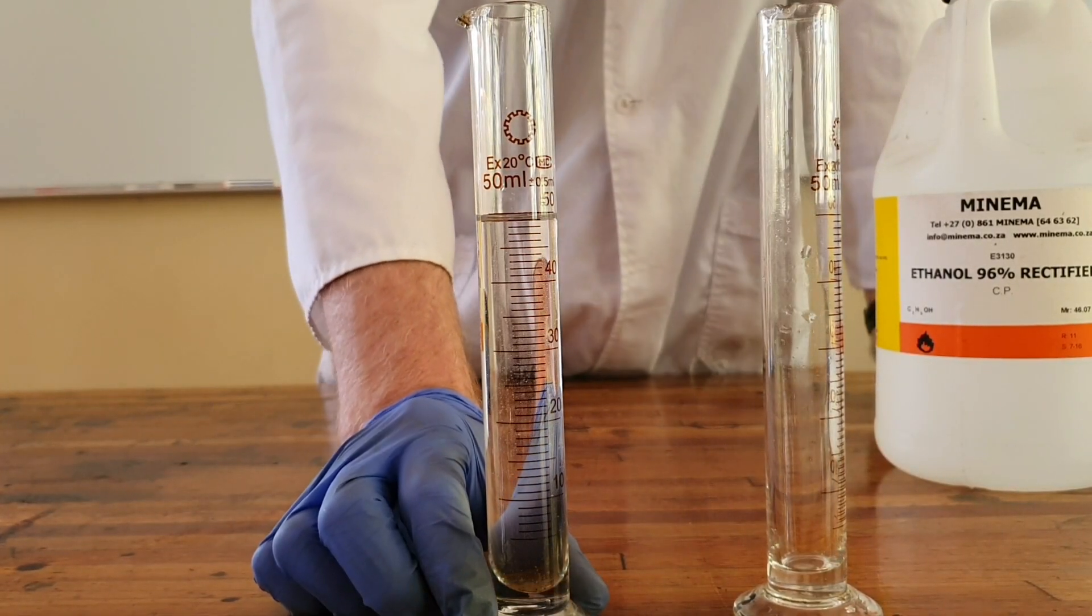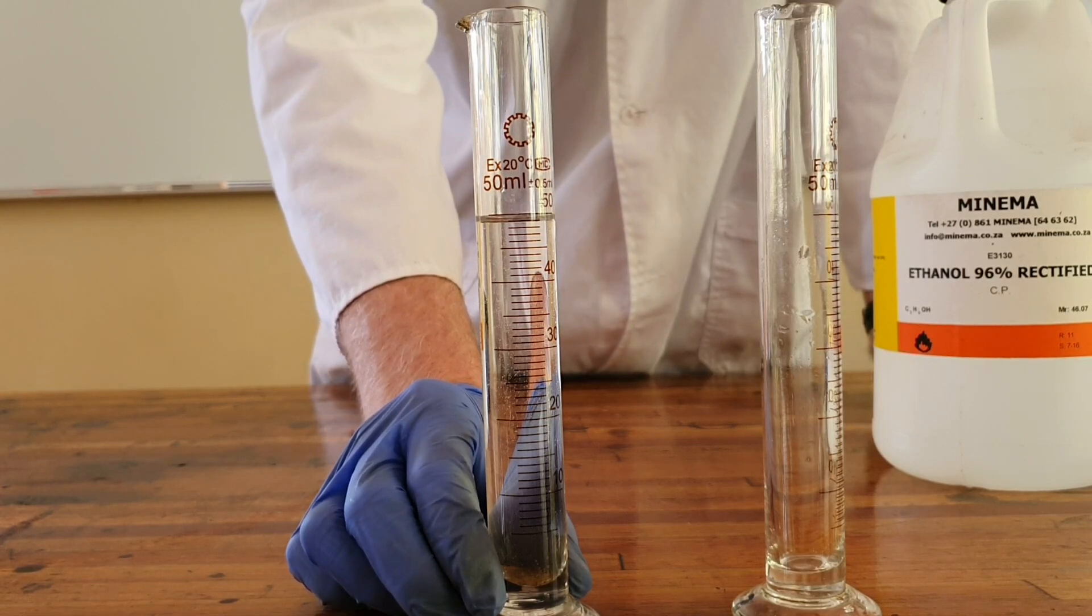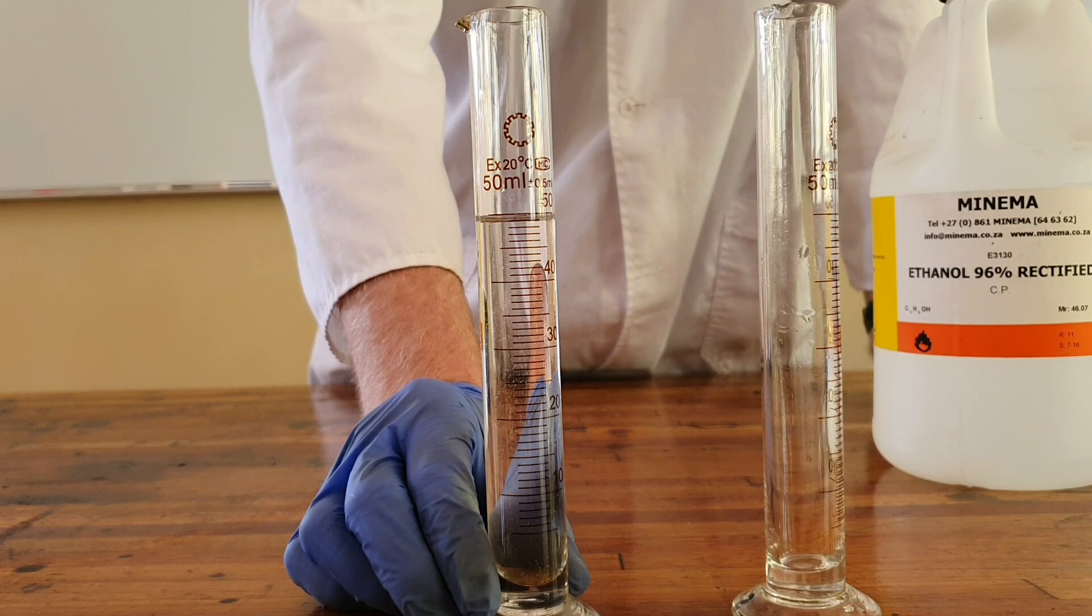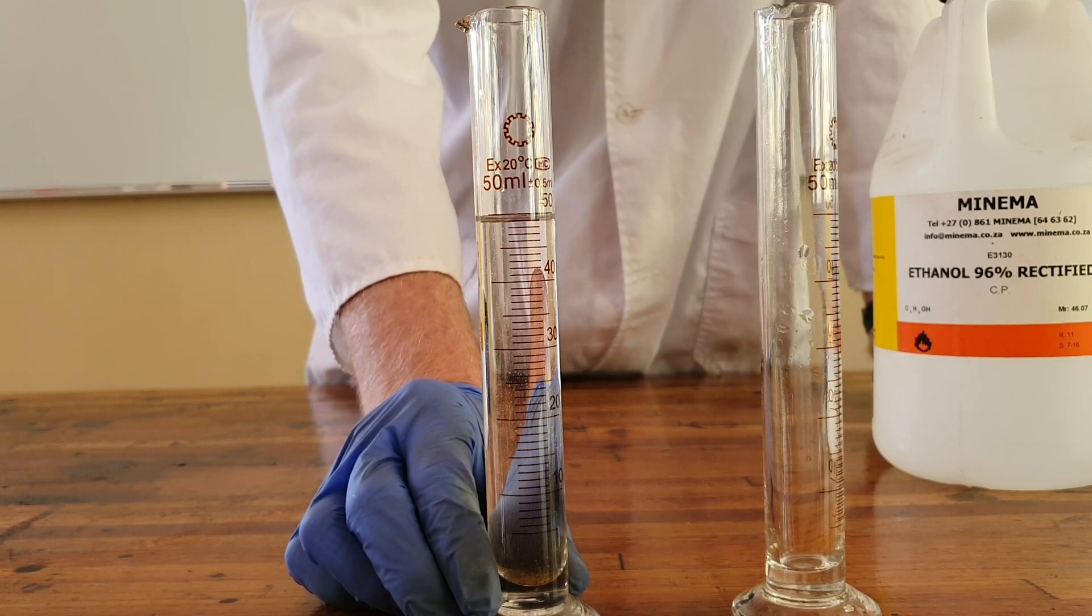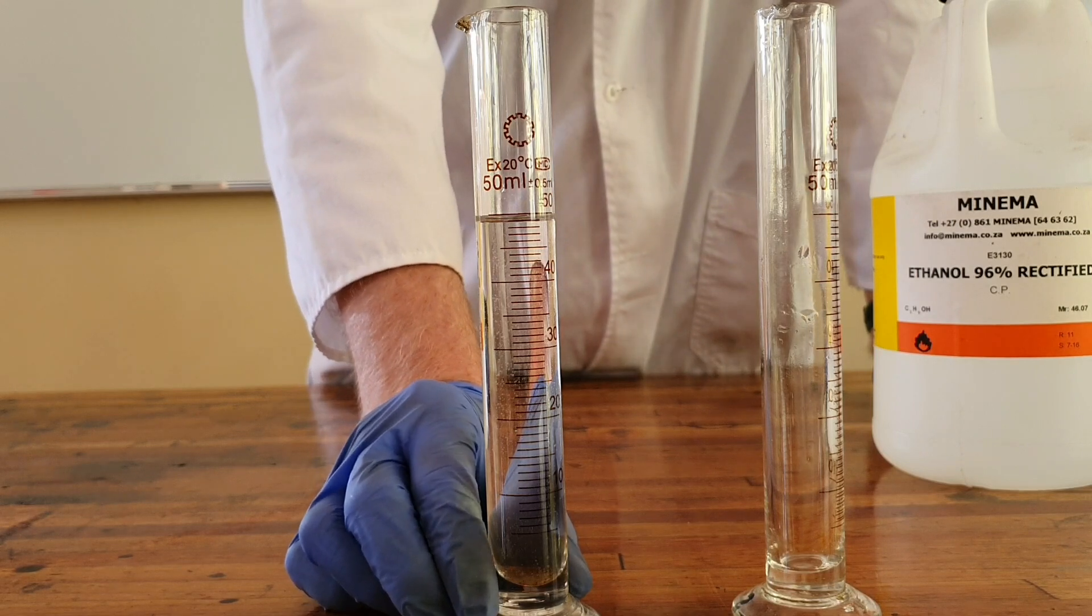As we can see here, the bottom of this meniscus now aligns with 49 milliliters and this shows us that some of the water molecules are able to fit in between the ethanol molecules, which means that they essentially occupy the same space.